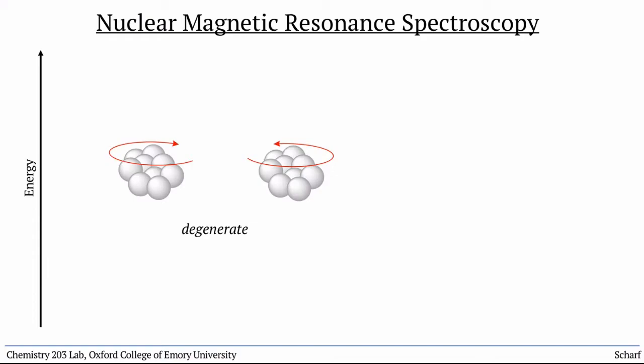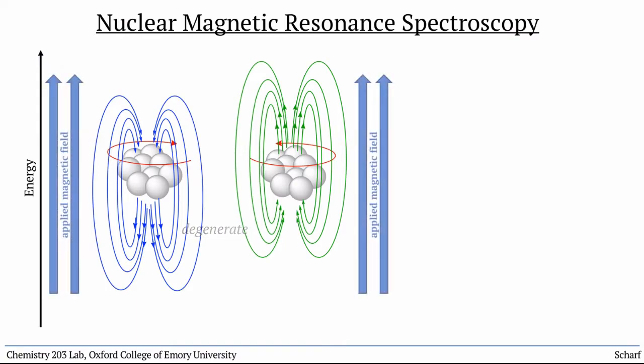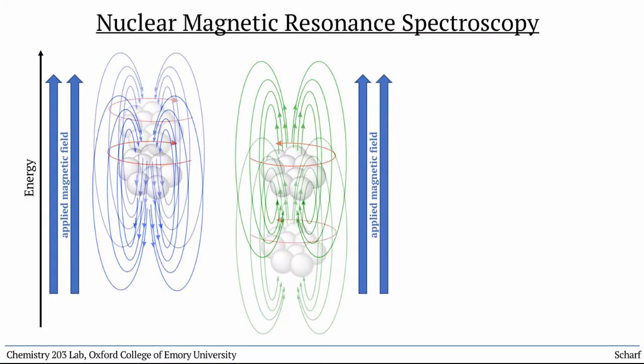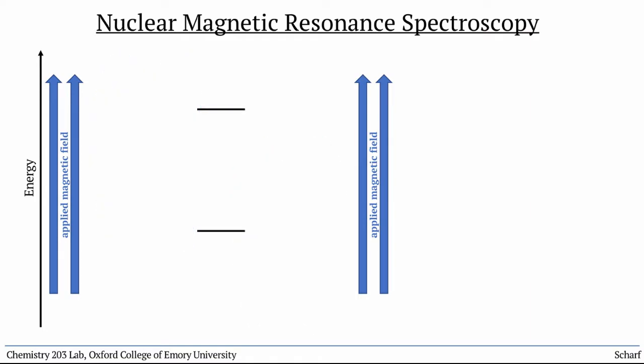But those two little spinning charges are creating magnetic fields of their own. And if we apply a magnetic field, which has directionality, then the nuclei whose spins align with the applied magnetic field are lower in energy than those whose spins align against the magnetic field that we've applied.